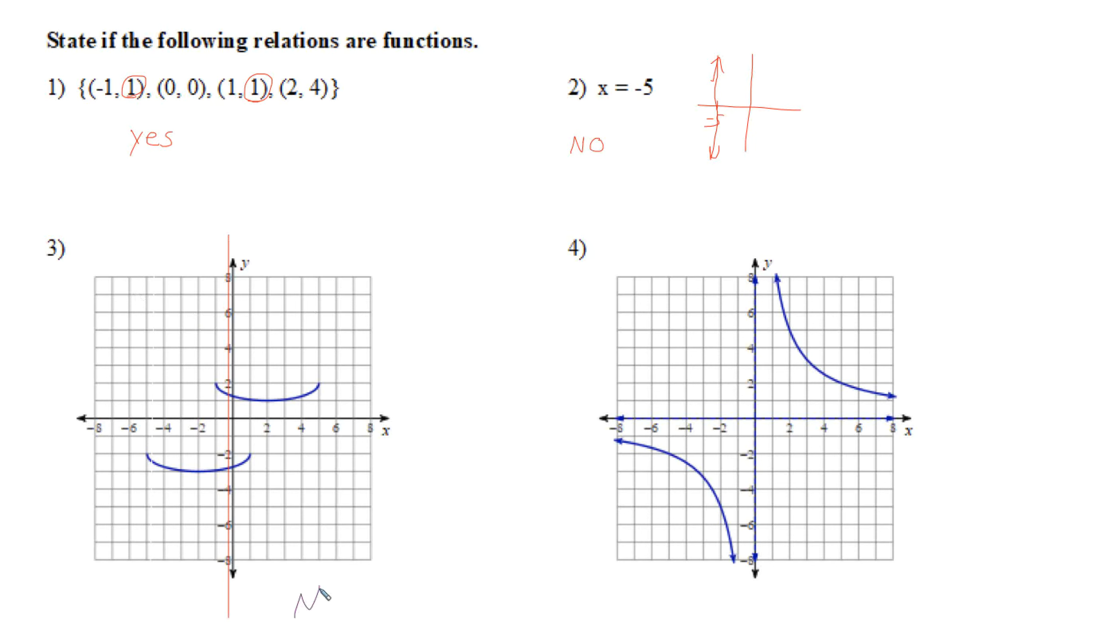This is no. And then over here we can do the same idea. Let's take our same vertical line, come across here, and in this case there is never a vertical line that goes through more than one point, so this one's a yes.